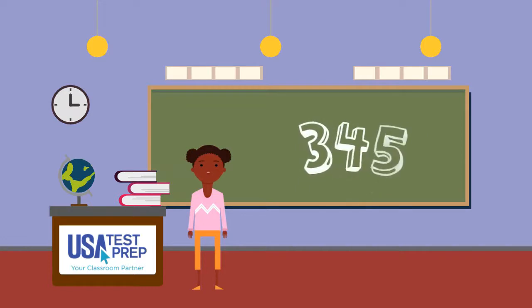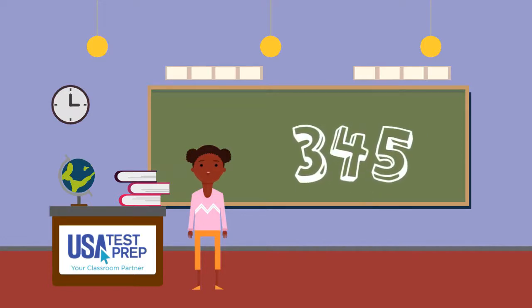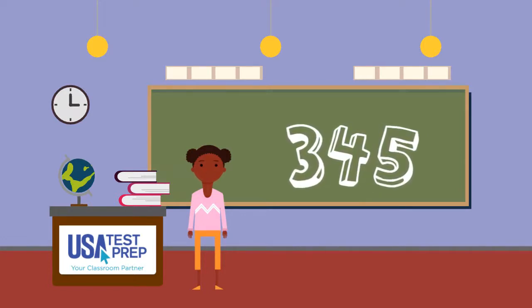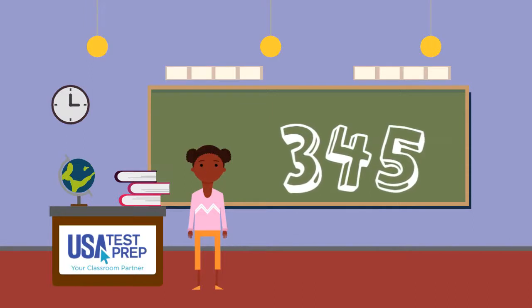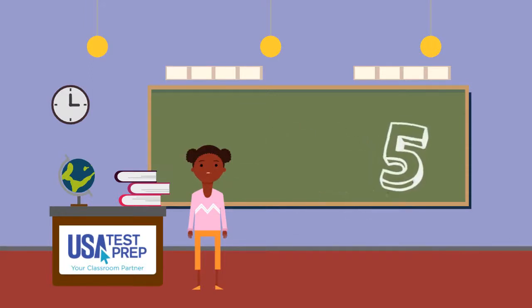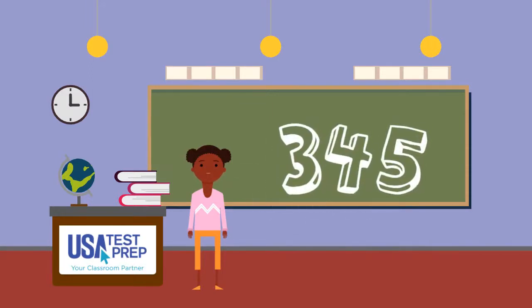Look at this number. This number is made of the digits 3, 4, and 5. Each number has a different place. The 5 is in the ones place, the 4 is in the tens place, and the 3 is in the hundreds place.